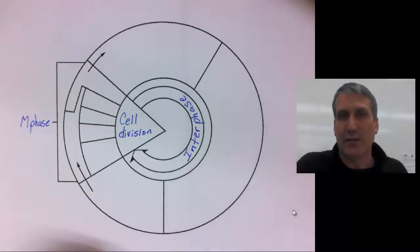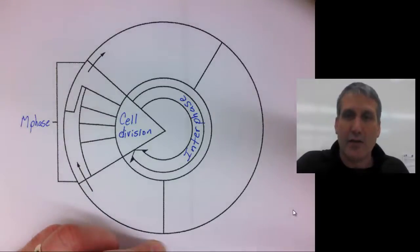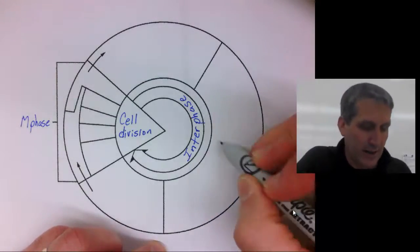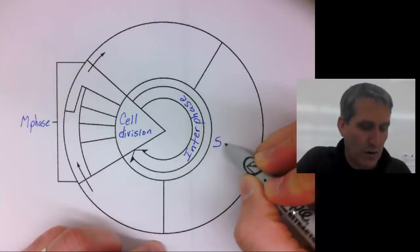I've already started us off with labeling two of the key parts of the cell cycle, interphase and cell division, which is also called M-phase. The other main important part of this cycle I want to label right away is called S-phase.